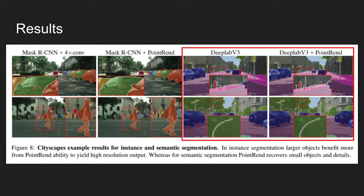On the other hand, for semantic segmentation, PointRend is able to recover small objects. On the third column of DeepLab V3, the segmentation result of the object is disconnected, but adding the PointRend module captures the detail of the object.